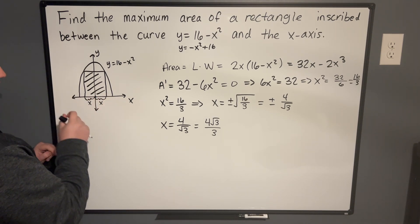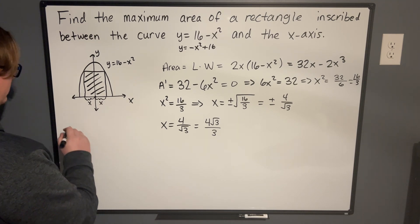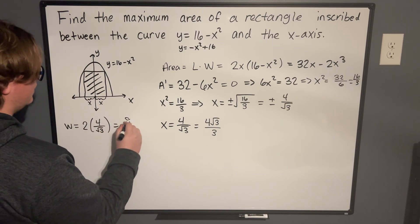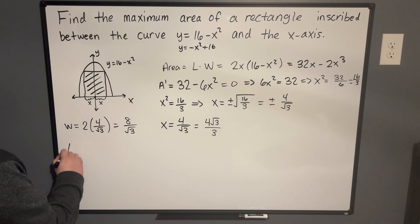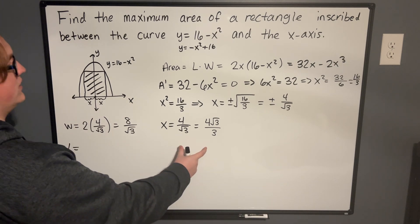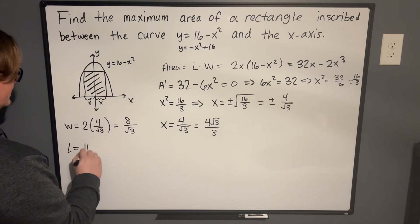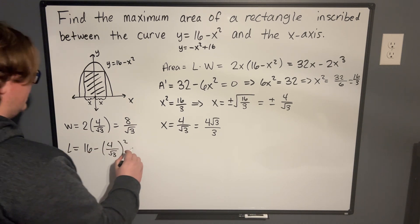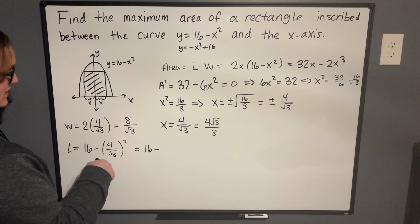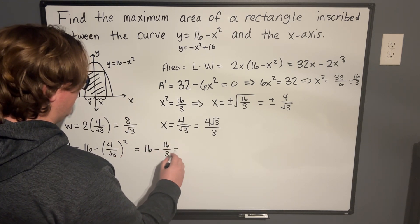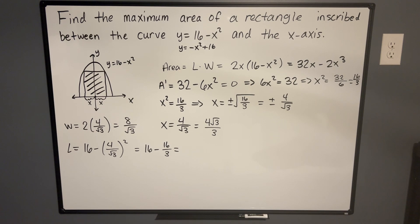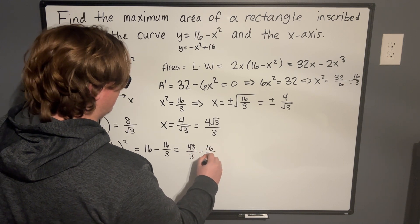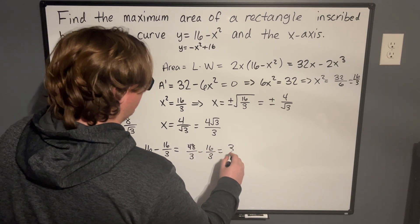So we found our x value. So the x value right here is 4 root 3 over 3 or just 4 over root 3. So that means that this entire side length is just going to be double that, because we have to include this length and that length. So we know, and we called that the width. So we'll say the width is equal to 2 times 4 over root 3, which is equal to 8 over root 3. And then the length, we know that we can just take whatever the x value is and plug it into this function. So the length is 16 minus this squared, so 4 over root 3 squared. And that's going to be 16 minus this turns into 16 over 3. And what that will end up being is, if we get a common denominator, we can multiply by 3 over 3. That's going to give me 48 over 3 minus 16 over 3, which that is going to give me 32 over 3.